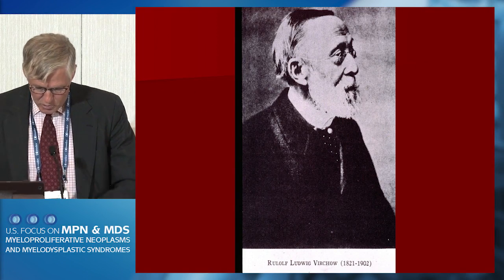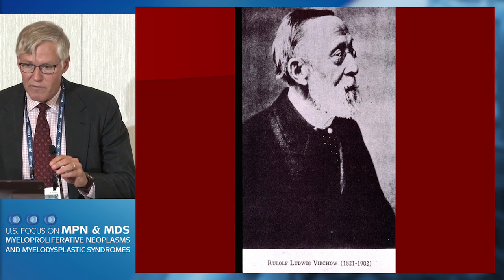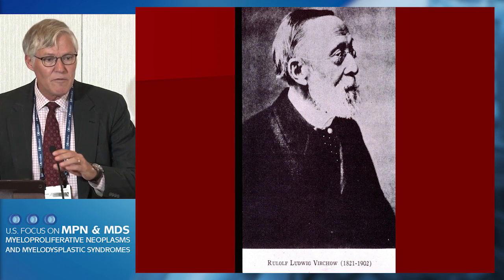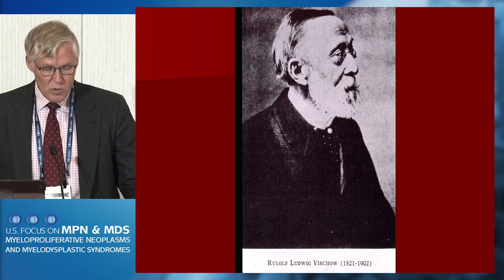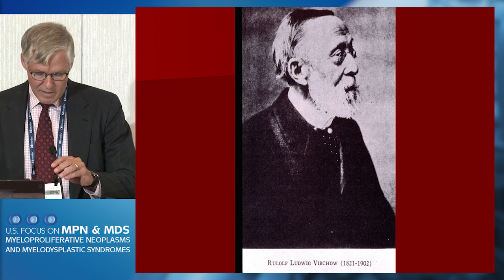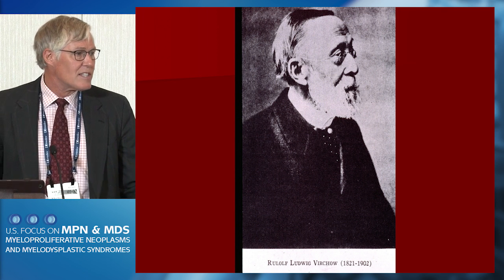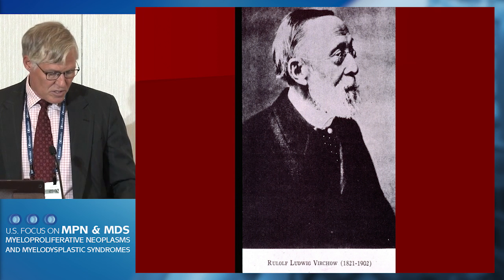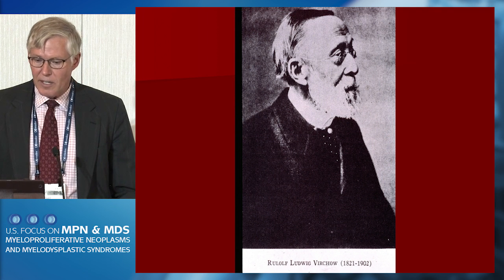This is Rudolf Virchow, who proposed the triad that we use to try to understand the pathophysiology of all thromboses — arterial and venous thromboses, a deep venous thrombosis, including those involving the leg veins and those involving the pelvic and abdominal veins. Virchow also interdigitates hematological malignancies with thrombosis, as he was one of the first describers of the syndrome we now call acute myelogenous leukemia.